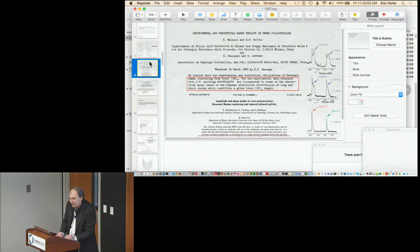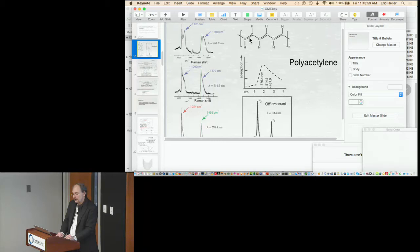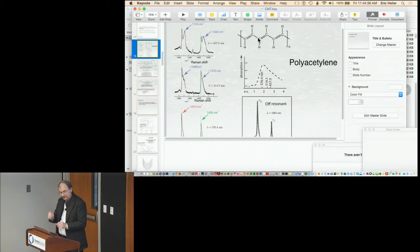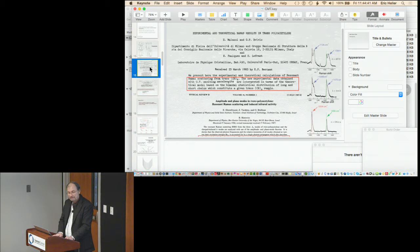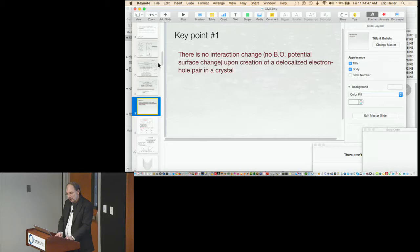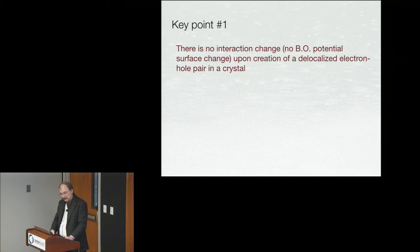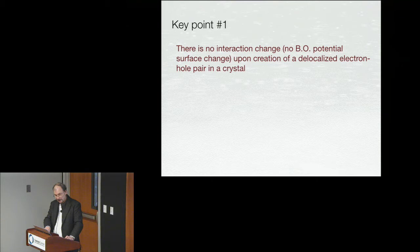I want to make key point number one. This is where we could be crazy point number one too, but we have support in the literature and it seems physically very correct. There is no interaction change, no Born-Oppenheimer potential surface change, upon creation of a delocalized electron hole pair in a crystal. I have 10 to the 20th of whatever electrons. I change one of them. All 10 to the 20th are delocalized over the whole crystal making the effective Born-Oppenheimer potential what it is. You're telling me that one electron is going to change all that and cause big shifts in nuclear positions and things? The nuclear positions are exactly the same. The shape of the potential is exactly the same after the electron hole pair has been created.